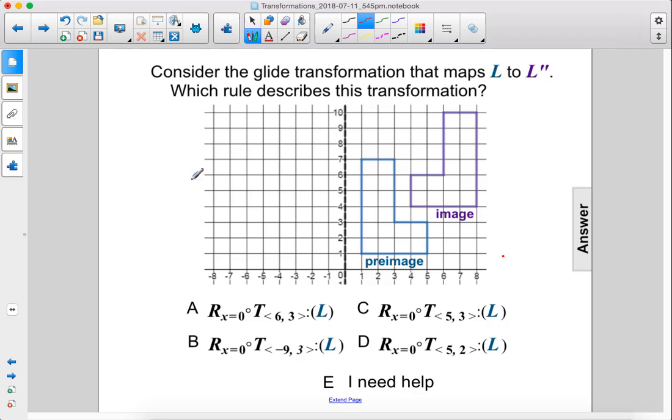Consider the glide transformation that maps L to L double prime. Which rule describes this transformation? Alright, so we see that this is our pre-image. The image has been reflected across this axis here because it's still right side up, it's just backwards looking. And so first we translate this somewhere over here and then reflect it to this position.